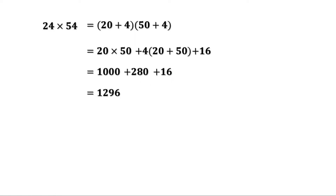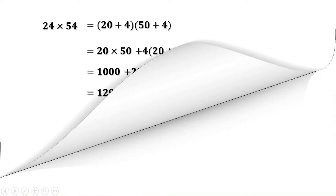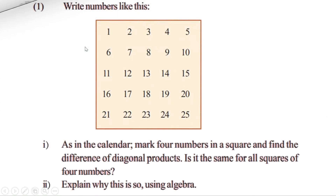Today, let us do the problems on page 68 and 69. First problem: write numbers as in the calendar, mark 4 numbers in a square, and find the difference of diagonal products. Is it the same for all squares of 4 numbers? Explain why this is so using algebra.